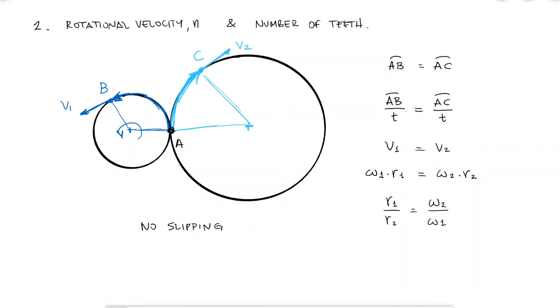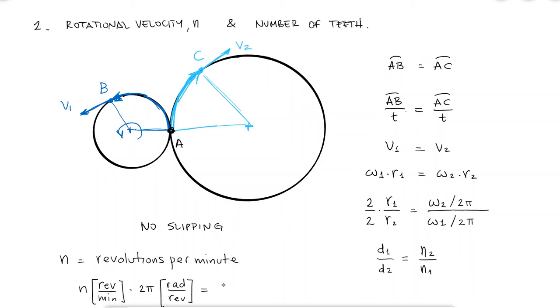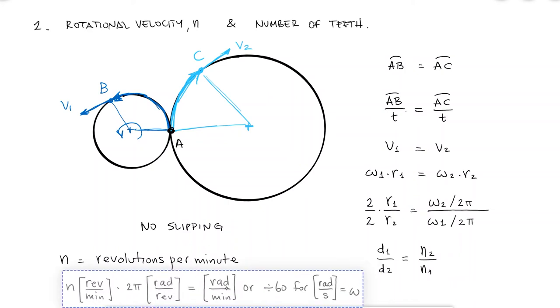Since we usually use the diameter and not the radius, and since we usually talk about revolutions per minute instead of angular velocity, we can multiply by 2 on the numerator and denominator of the left-hand side, and divide by 2 pi on the numerator and denominator of the right-hand side. The left-hand would be the ratio between gear diameters, and the right-hand side would be the number of revolutions per minute since there are 2 pi radians per revolution to find omega, the angular velocity.